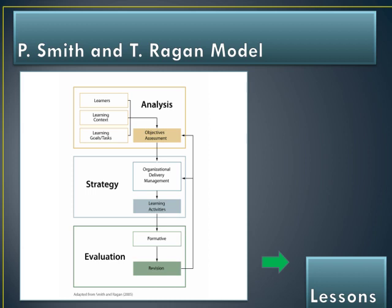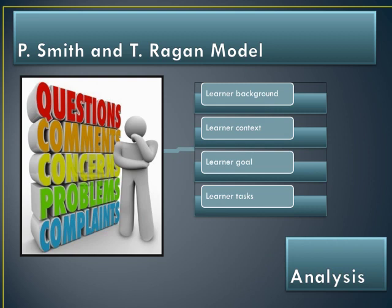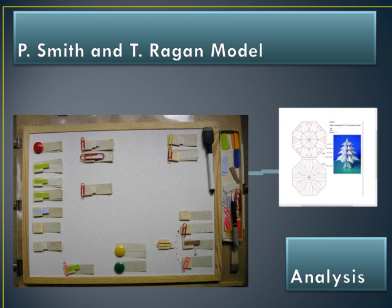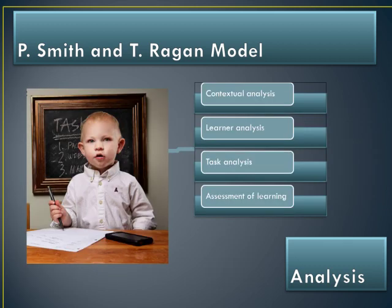The Smith and Reagan module outlines the events of instruction by extending instructional plans into lessons. Their analysis is critical to instructional design; most modules overlook this step and focus on front-end analysis. Analysis focal point is on the learner's background, learner's context, and learning goals and tasks. The analysis process involves four components: contextual analysis, learning analysis, task analysis, and assessment of learning.